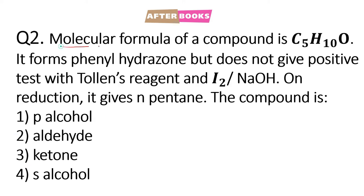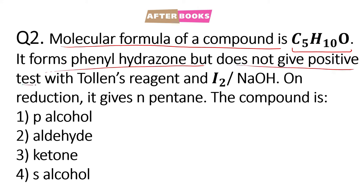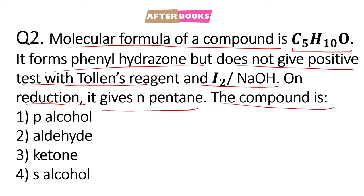Question number 2: a compound hai jis ka molecular formula hai C5H10O. Yeh kya form kerta hai — it forms phenyl hydrazone. But yahan pe given hai ki na toh yeh positive Tollens test dayta hai aur na hi yeh positive iodoform test dayta hai. Aur is compound ke baare mein given hai ki agar hum is compound ki reduction karvayenge toh hume milega n-pentane. Toh isme se hume compound identify karna hai.